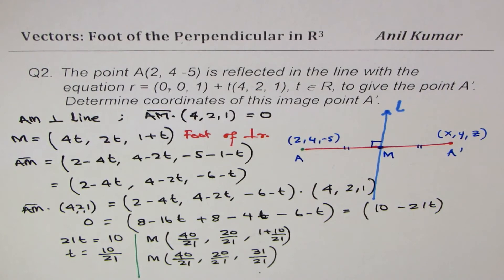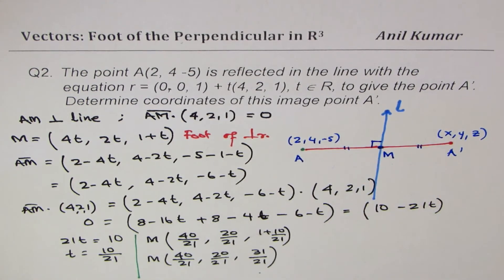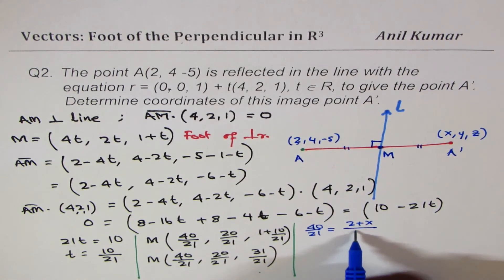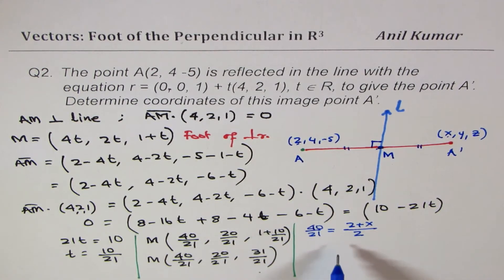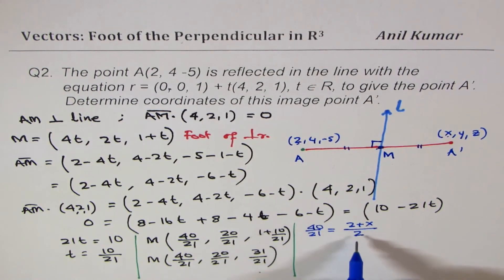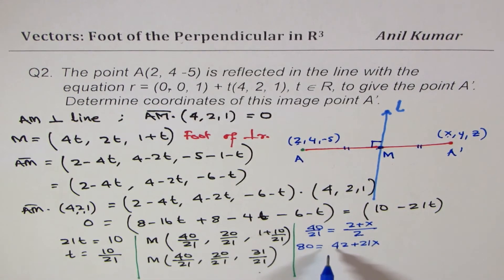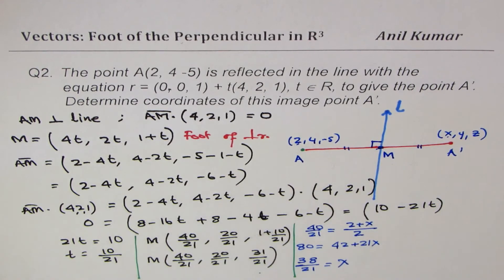Now we find the image point A dash with coordinates (x, y, z). Since M is the midpoint of A and A dash, we use the midpoint formula. For the x-coordinate: 40/21 equals (2 plus x)/2. Cross-multiplying gives 80 equals 42 plus 21x, so 21x equals 38, giving x equals 38/21.